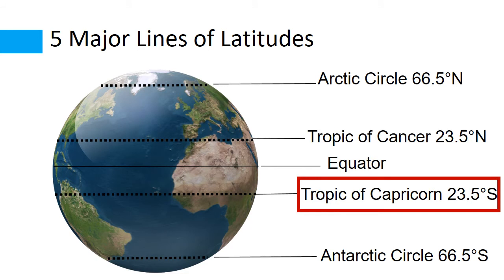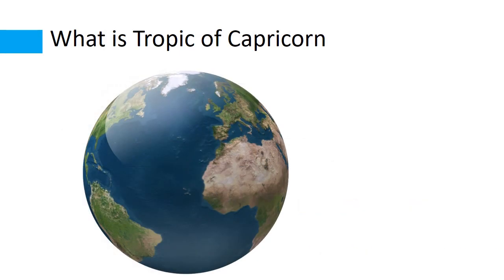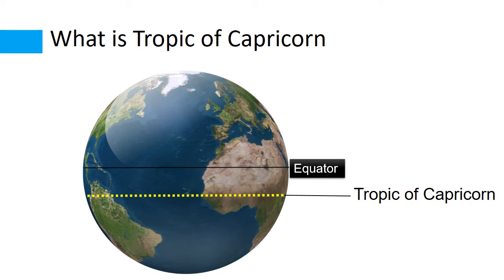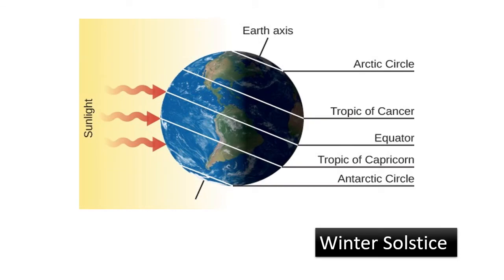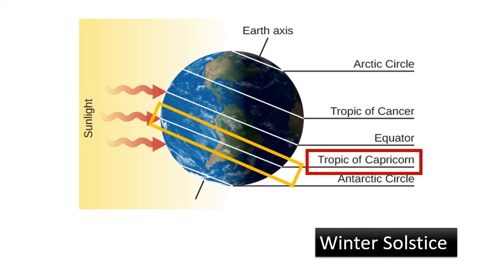In this video, I am taking the topic: what is Capricorn? Now look at this image. This is the common image of earth. This line is the equator, at 0 degrees latitude. This line is called the Tropic of Capricorn. It is in the Southern Hemisphere and is located at 23.5 degrees south from the equator. The Tropic of Capricorn lies at 23.5 degrees south of the equator and marks the most southerly latitude at which the sun can appear directly overhead at noon. This event occurs at the winter solstice when the southern hemisphere is tilted towards the sun to its maximum extent.